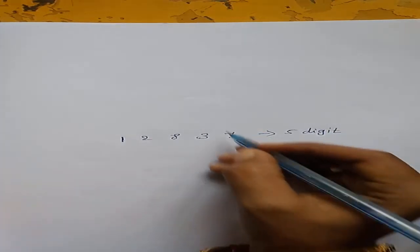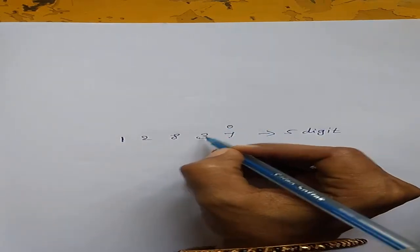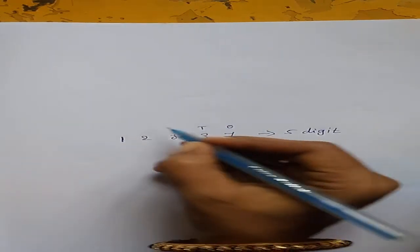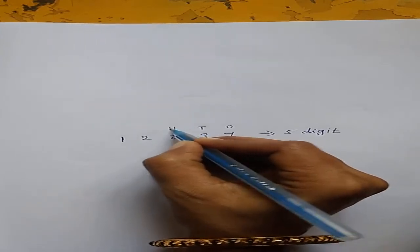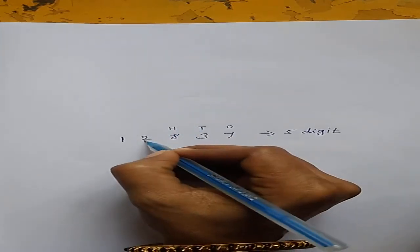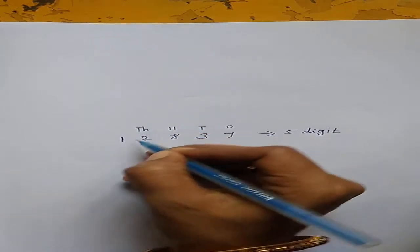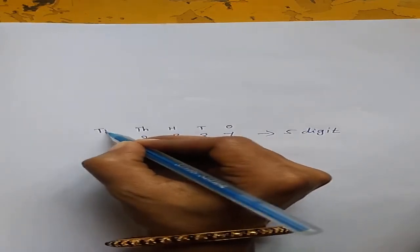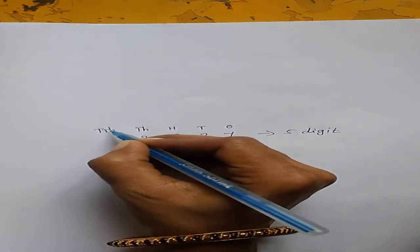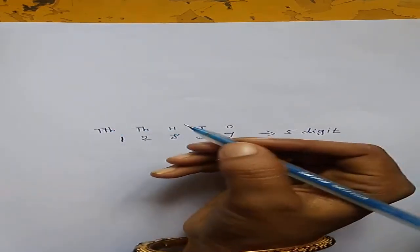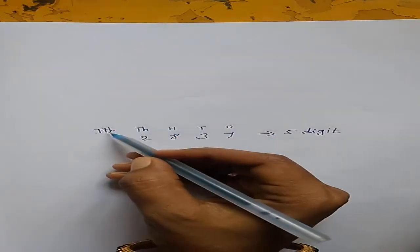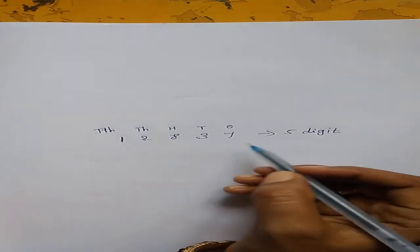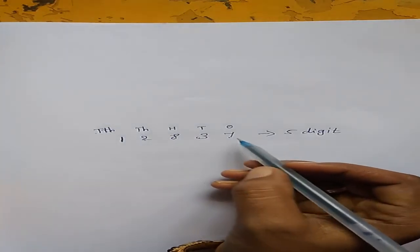The 1st place is ones, 2nd place is tens, 3rd place is hundreds, 4th place is thousands, and the 5th place is ten-thousands. TTH means 10,000. So this is a 5-digit number.